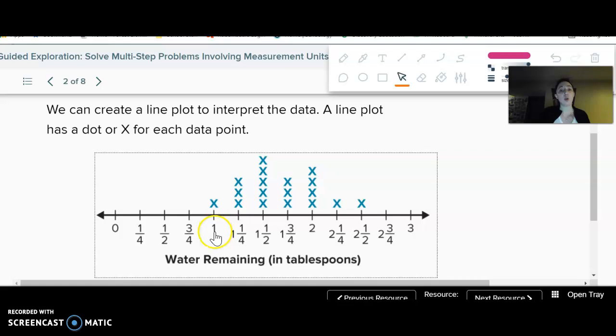So in this case, each cup is represented by an X. So like this cup had one tablespoon of water. This cup, this cup, and this cup all had one and one fourth, which match the numbers in the table. So you just took the numbers in the table, made X's where they belong.